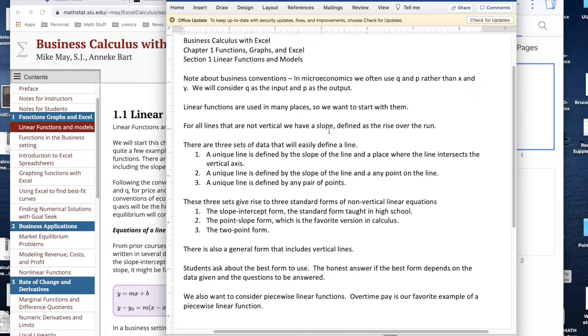There are three sets of data that easily define a line. A unique line is given by the slope and the intercept where it intercepts the X origin, or by the slope and any point on the line, or by a pair of points. Any of these will give you a unique line.